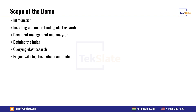Elasticsearch is made up of three components. The first component is shards, and then there are replica shards and primary shards. These components play an important role when you talk about Elasticsearch. These shards are under the indexes.